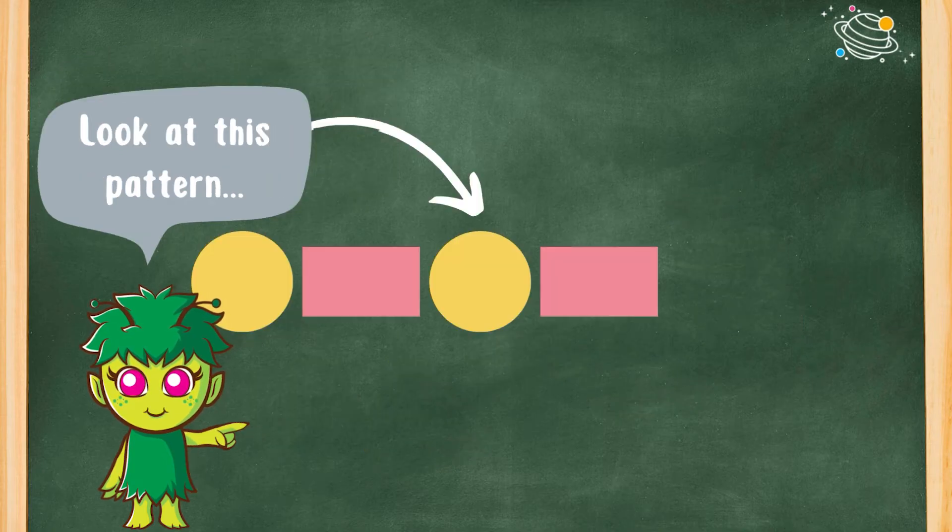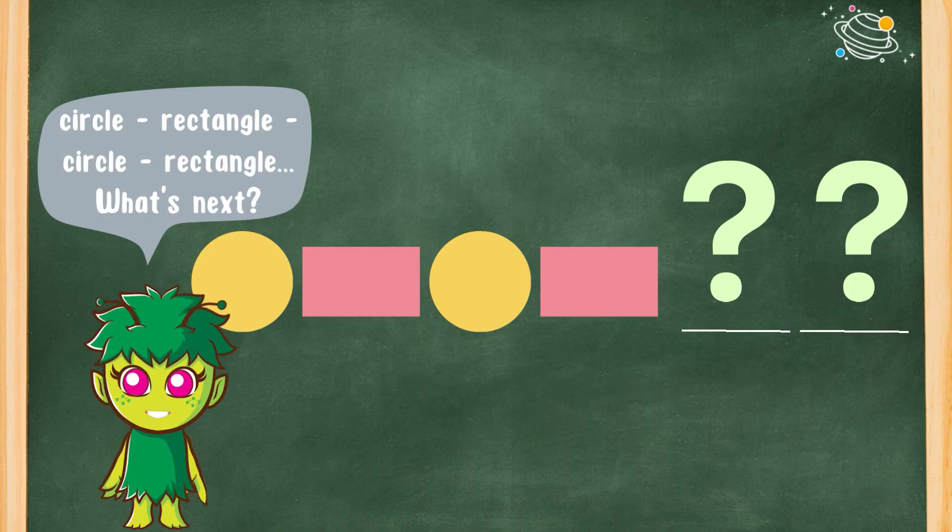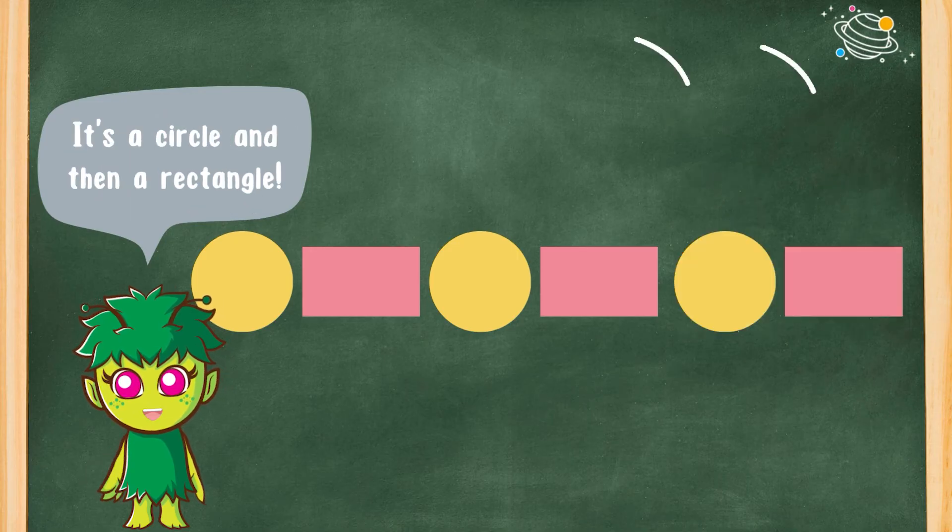Look at this pattern. Circle, rectangle, circle, rectangle. What's next? It's a circle, and then a rectangle.